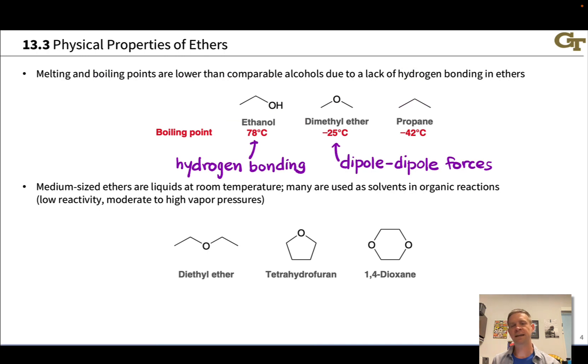Now, because ethers tend to be unreactive, and once we get enough carbons in there tend to exist as liquids at room temperature, they're often used as solvents in organic reactions, and three common examples are shown here. There's diethyl ether, or Et2O, tetrahydrofuran, or THF, and 1,4-dioxane, which contains two ether groups in the structure. All three of these compounds are quite stable to many different types of organic reaction conditions, and are all liquids at room temperature. They're also polar, right? So they have the ability to solubilize polar organic reactants, and sometimes even ionic compounds.